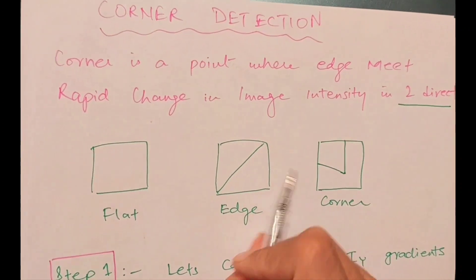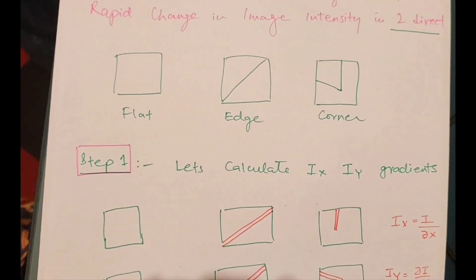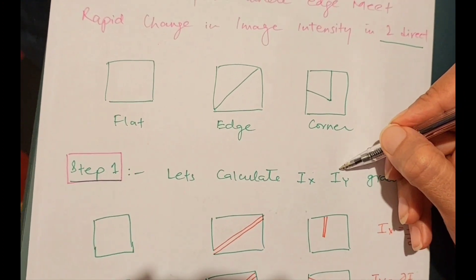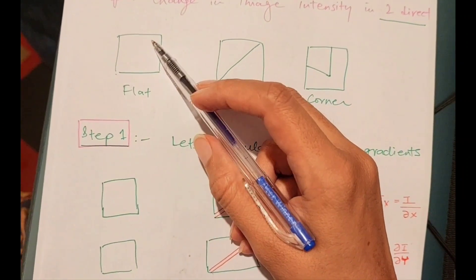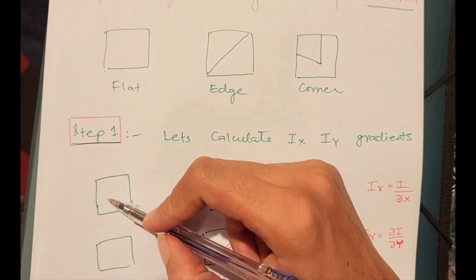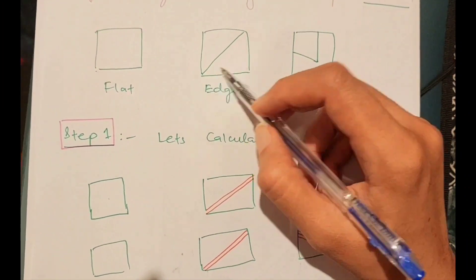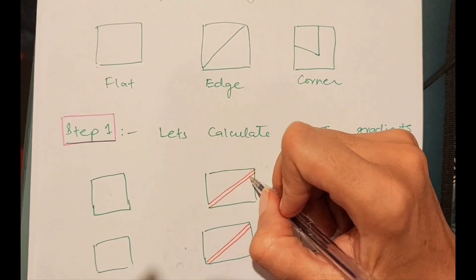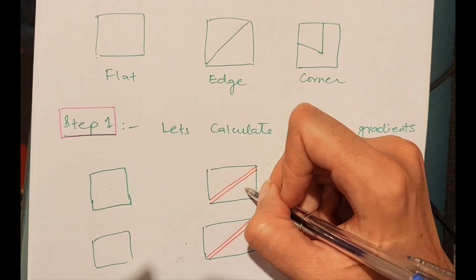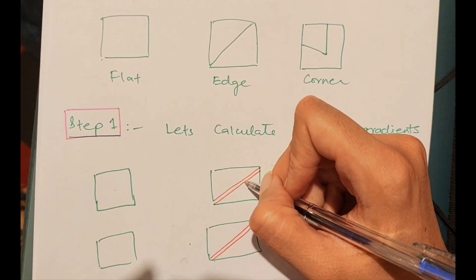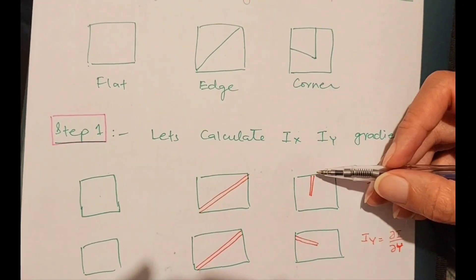In the first step, to find the corner we calculate the gradients along the x-axis and along the y-axis. Once we calculate the gradients of these three shapes, for the flat region there is no edge and no gray level changes, so the gradient will be blank — no sharp changes in intensity. For the diagonal edge, we find a sharp gradient, represented as white (high intensity) in binary images.